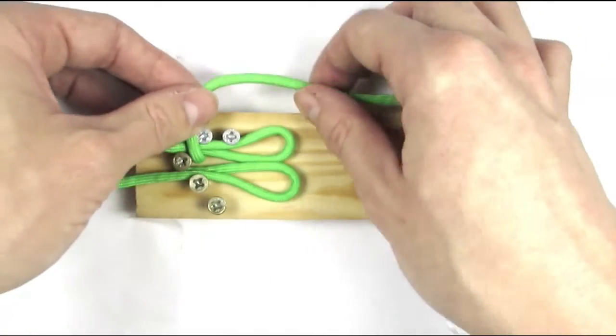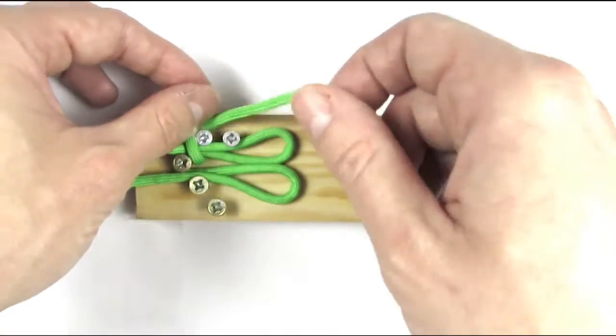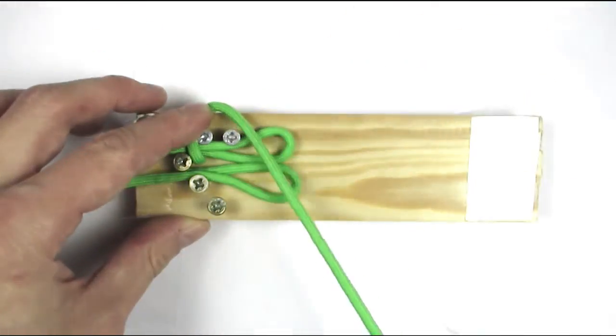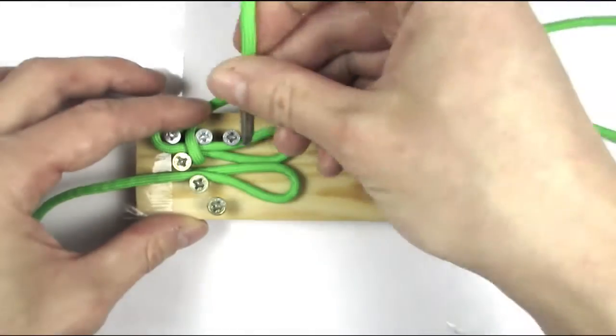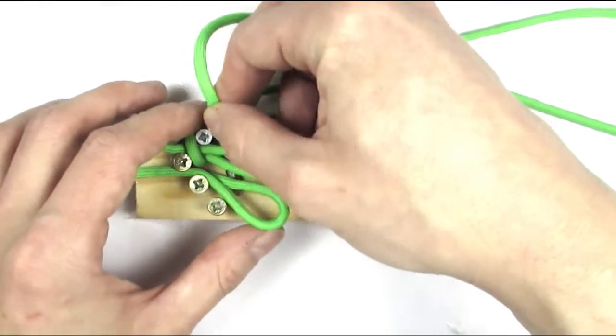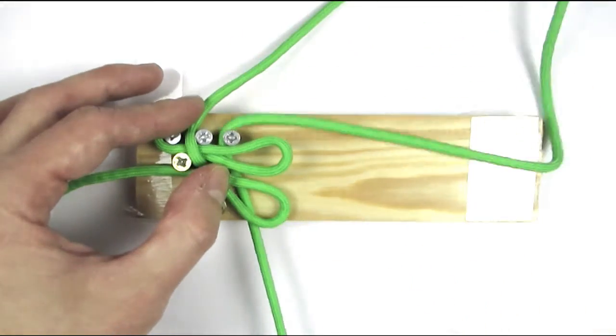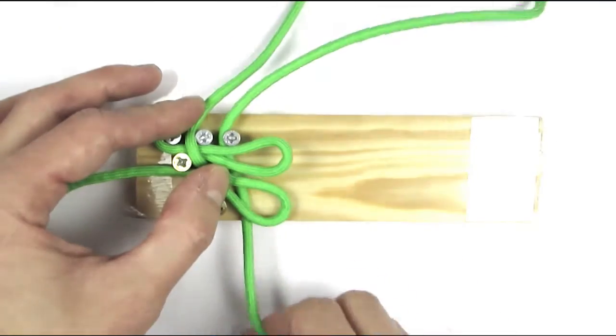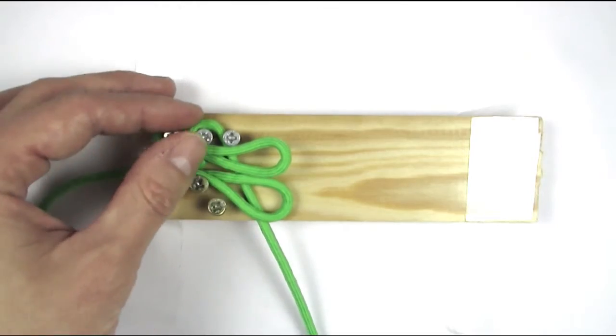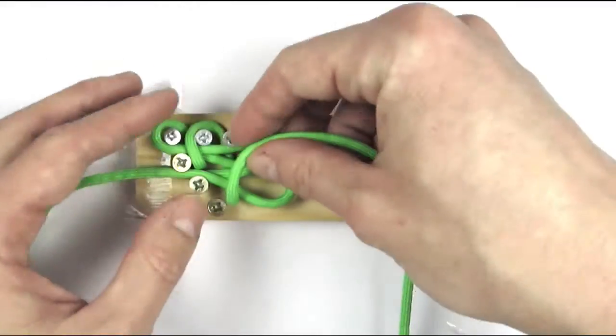And then fold it over the same section. So go under, and then fold over the two bights.